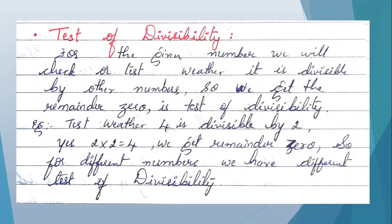Test of divisibility means we will test the number whether it is divisible by which table. Different numbers will be given and we will test in which table the given number is divisible. For the given number we will check or test whether it is divisible by other numbers or tables. When we divide, we should get the remainder as 0. Then it is called test of divisibility.